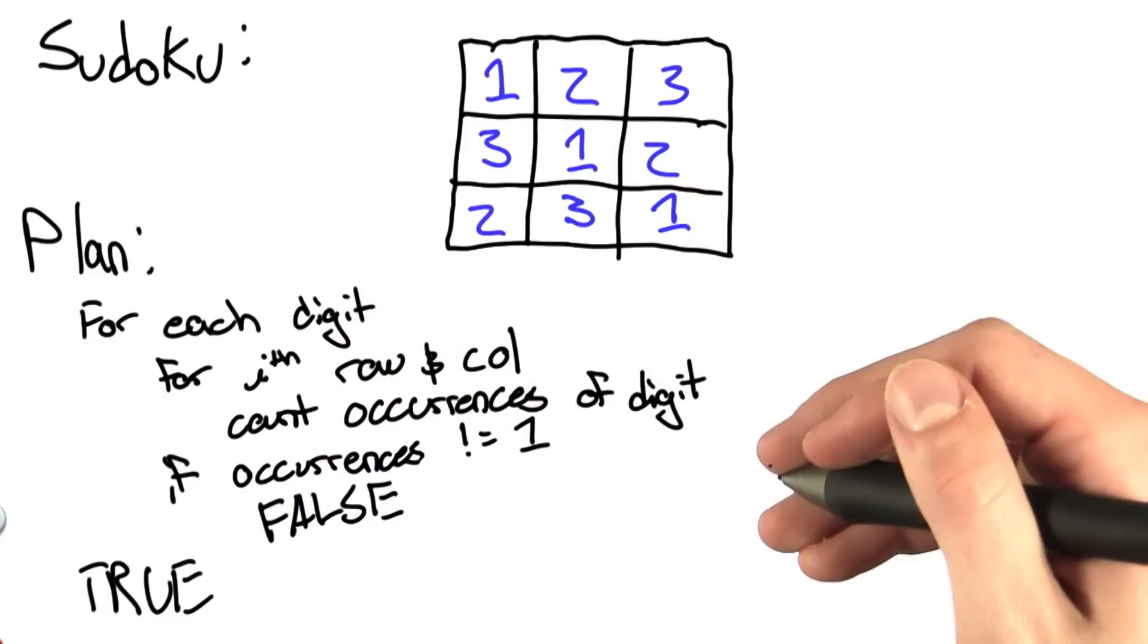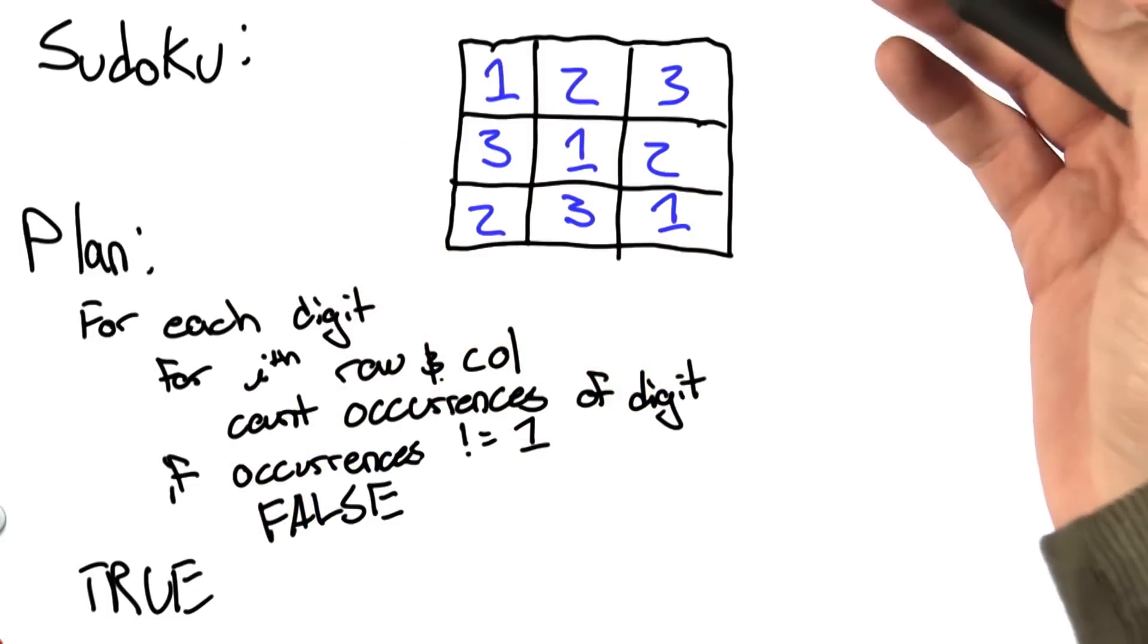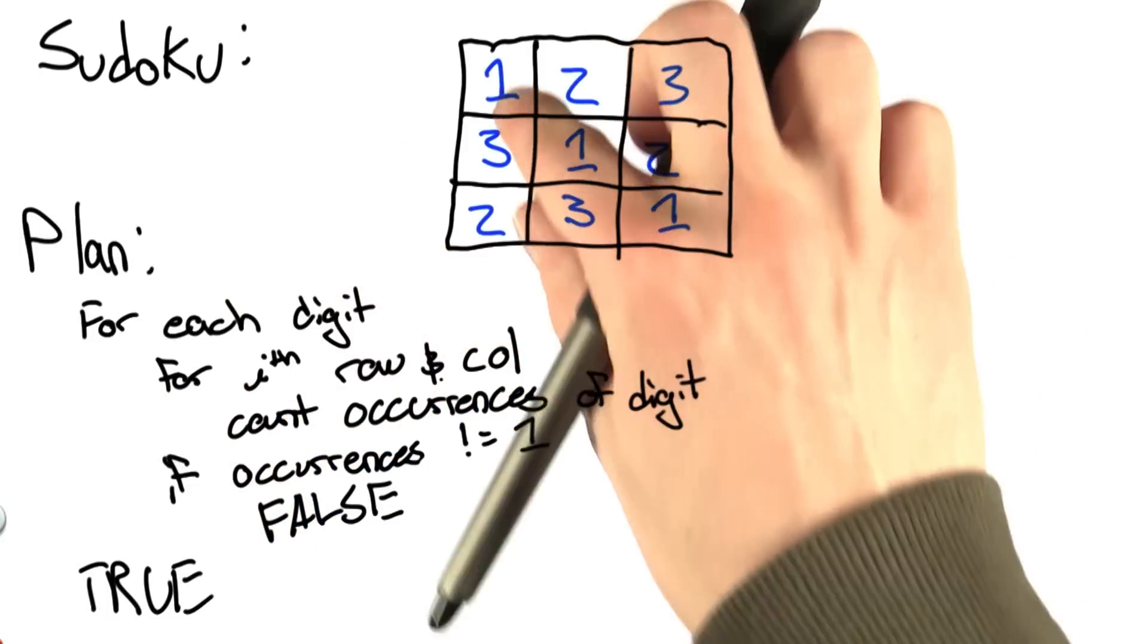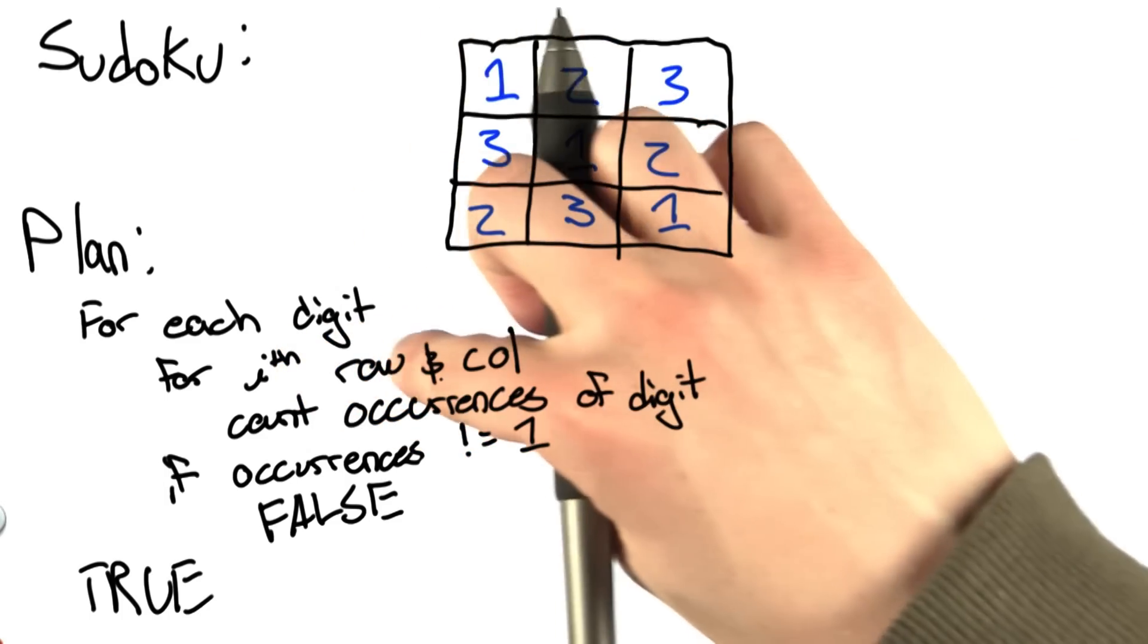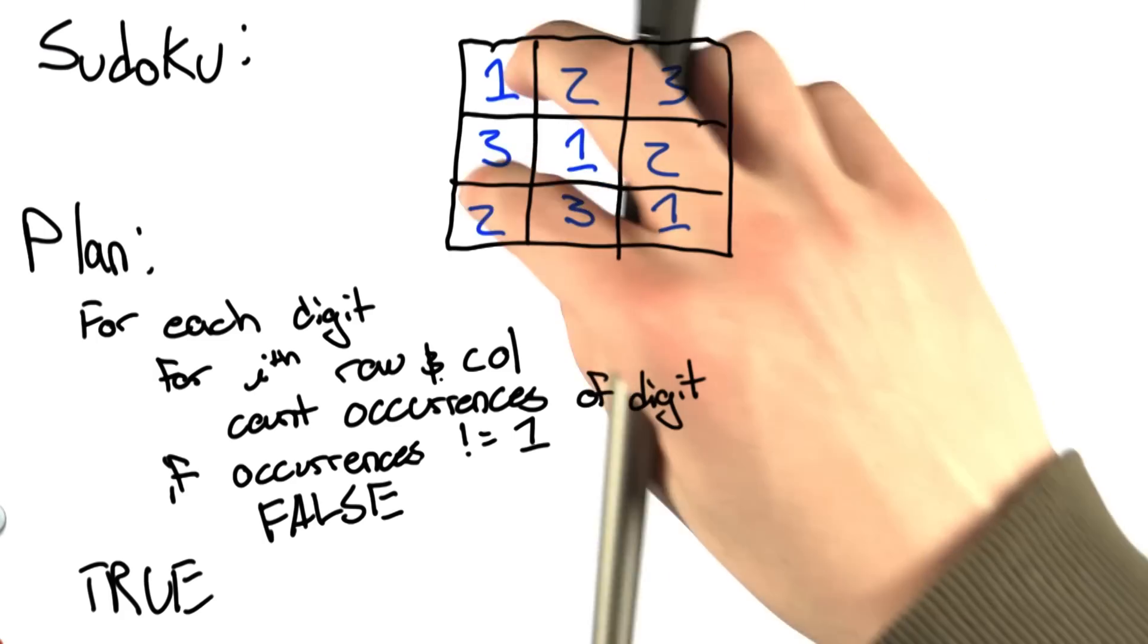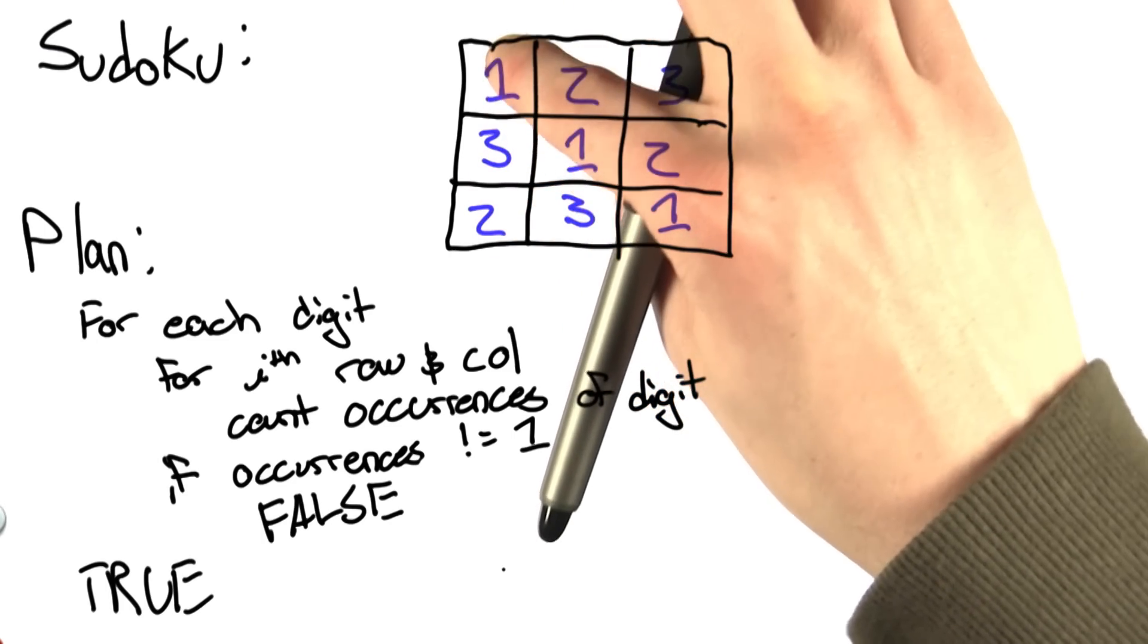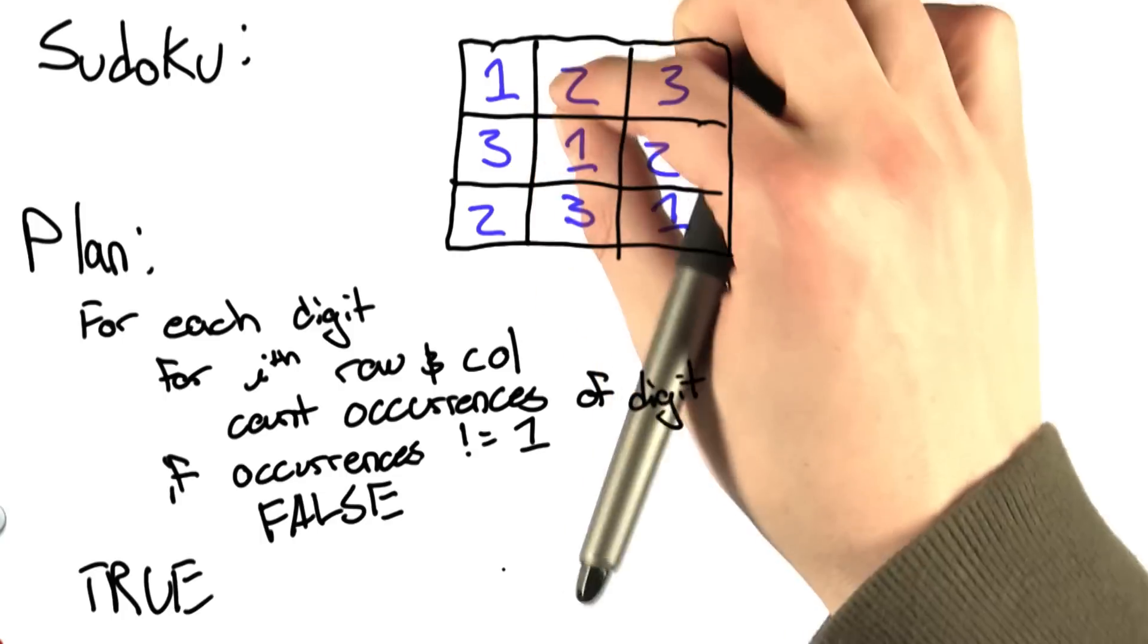Here's our plan of action for solving this problem. We're going to go through each digit, 1 through n. In this case, 1 through 3. So we're going to start with 1 and go through each row and column at the same time, checking to see that that digit occurs once and only once in each row and column.